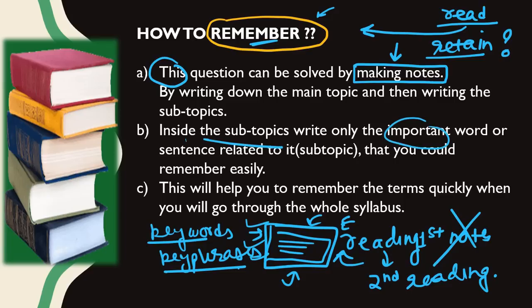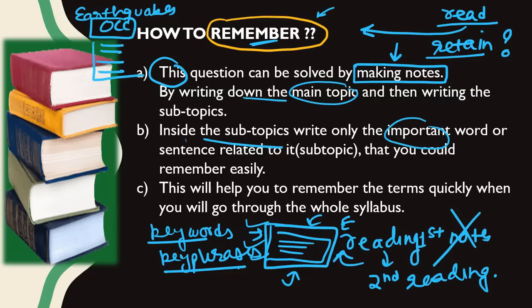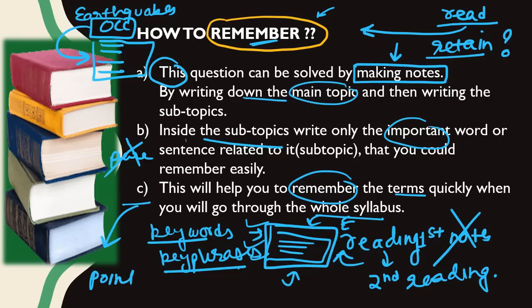First of all, write down the main topic. For example, earthquakes. Then write the sub-topics, like how earthquakes occur. Make five or six sub-points about the process of occurrence. Do not make notes in paragraph format. Always make notes in point format.